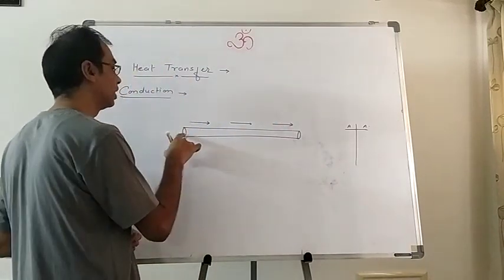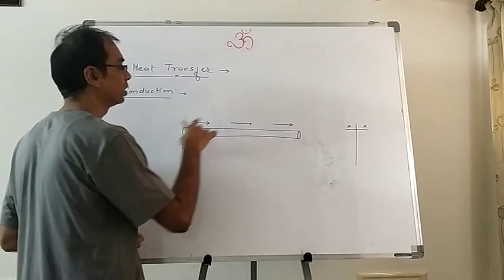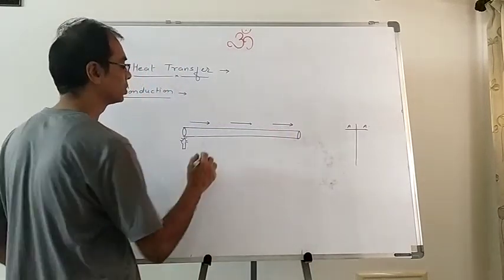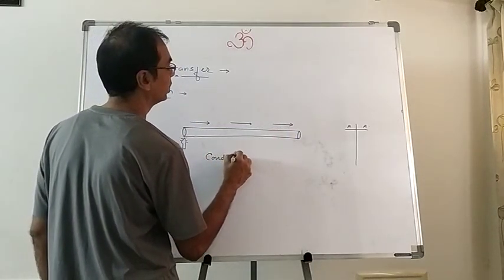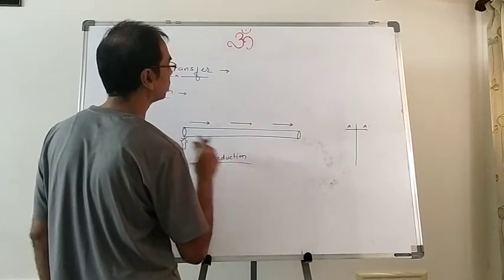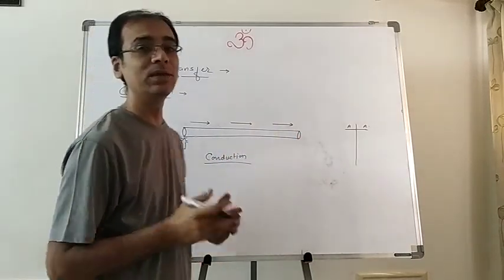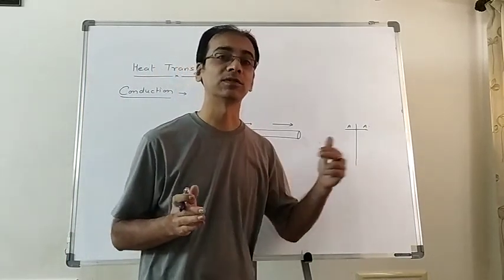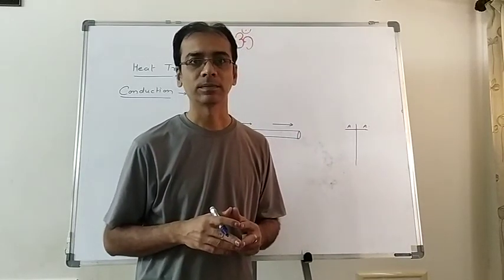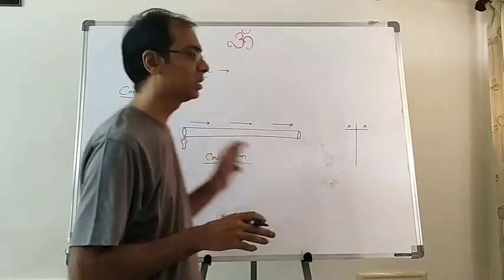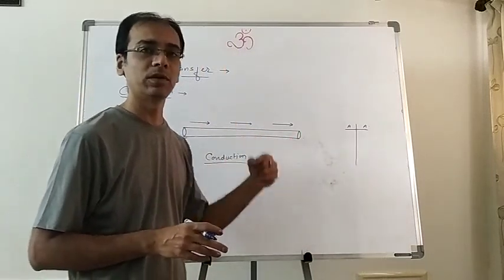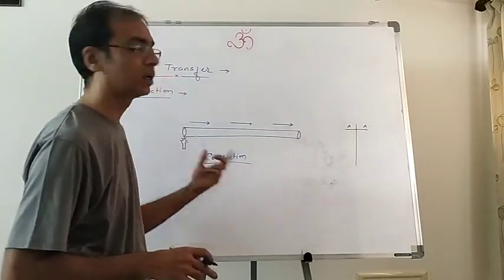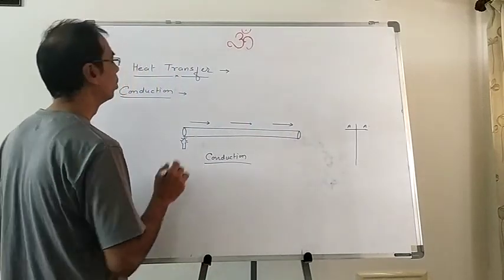Heat is getting transferred through collisions. This layer of molecules is not physically moving, but the energy is being passed — this process is called conduction. Mass doesn't move but heat is moving. Molecules are involved, but they are not moving along the direction of heat transfer. That process is called conduction.